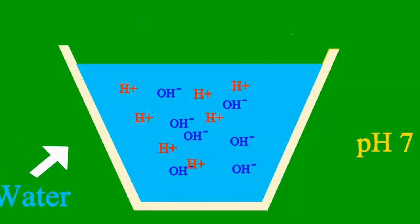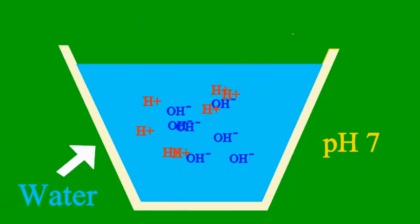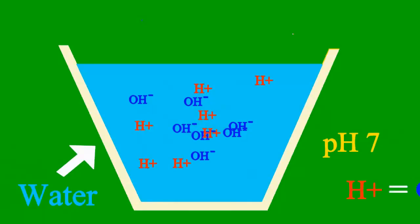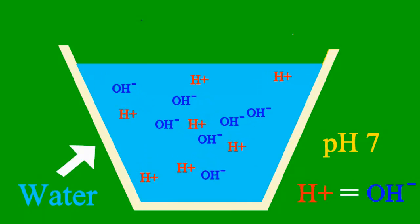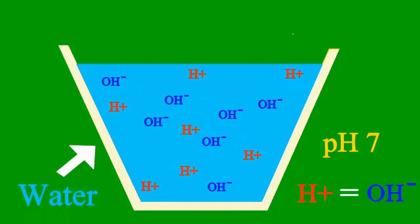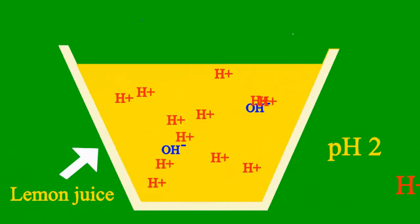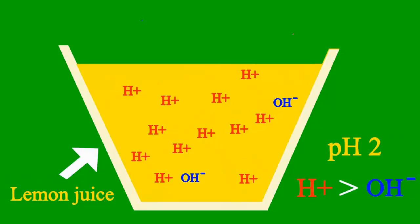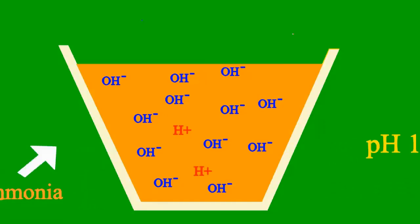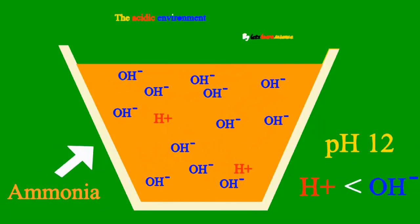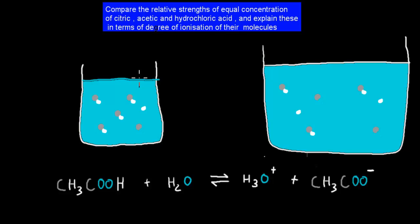When the pH is 7, the sample is neither an acid nor a base. But less than 7, it's an acid. More than 7, it's a base.